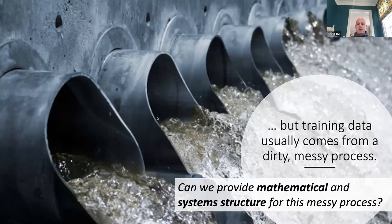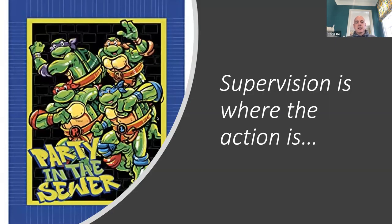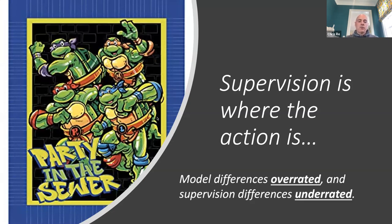This work led to really this idea: could we build a mathematical and system structure that captures some of this messy process and makes it a little bit less awful? I will argue that this is actually a place that is really critical in machine learning right now. Supervision and training data construction is actually where all the action is. Modeling differences are vastly overrated and supervision differences are vastly underrated. Models are clearly important, but the weighting in our minds of what makes a successful or failing machine learning system has been weighted strangely over the last couple of years — we need more work on the supervision side.